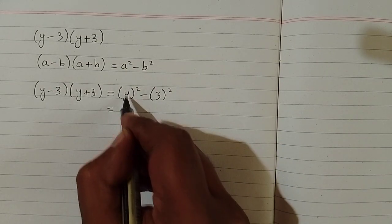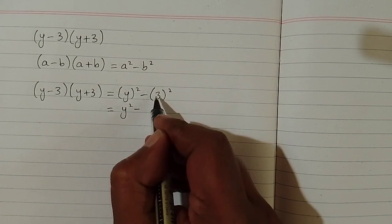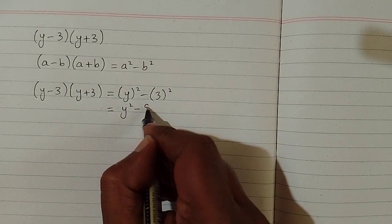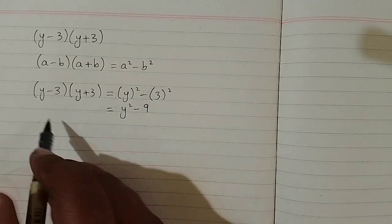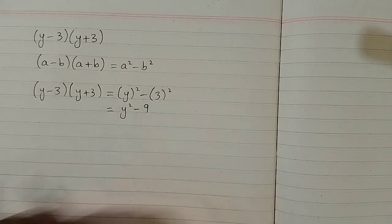Now square of y is y², then minus sign, and square of 3 is 9. So the product of (y-3) and (y+3) is equal to y² - 9.